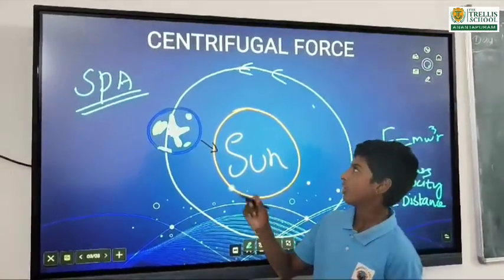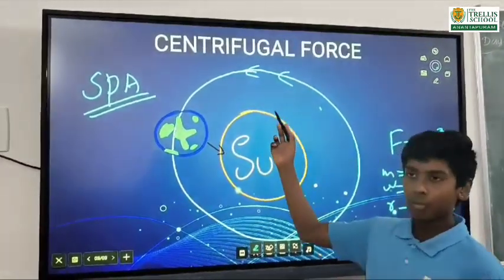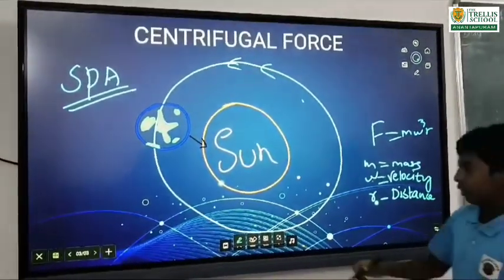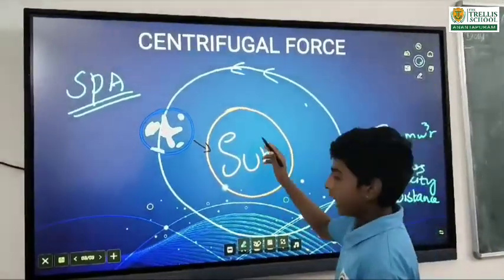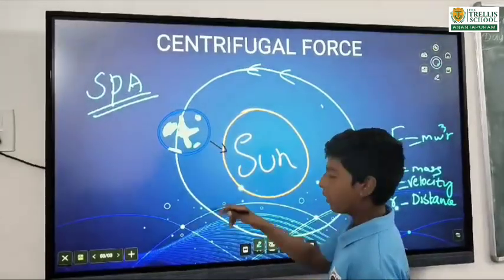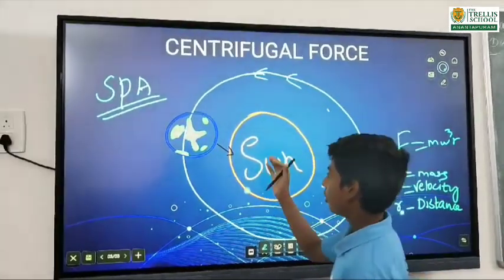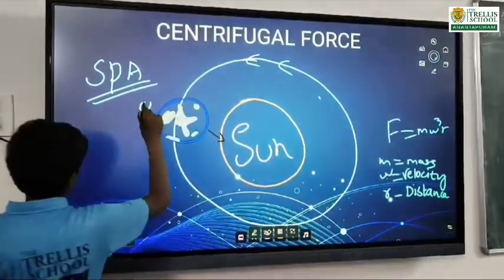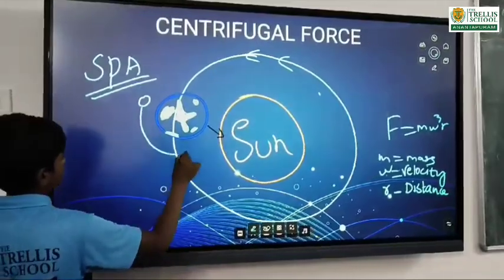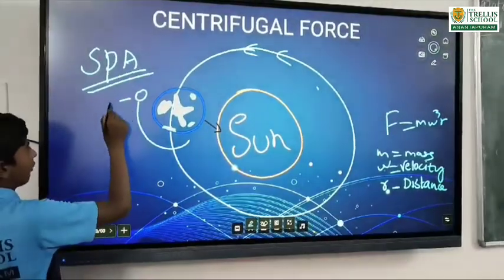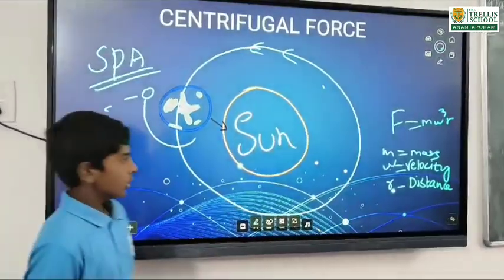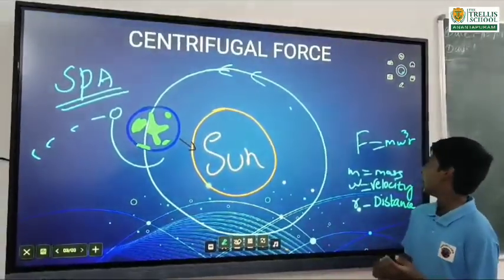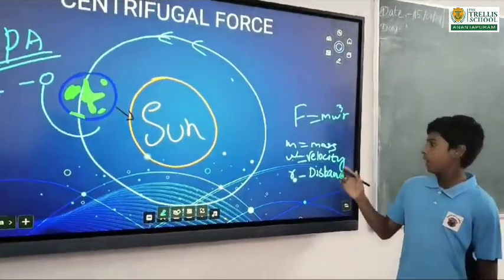This is because of the centrifugal force. Centrifugal force is — for example, we have the Sun over here and the Earth will be orbiting the Sun, but the Sun will be moving the Earth away. Let's take the Moon — the Moon also orbits the Earth but the Moon is drifting away, away every day. So this is the centrifugal force, and the formula for this is MWQY.